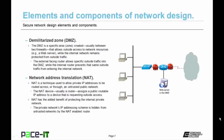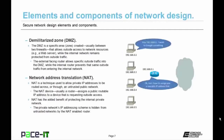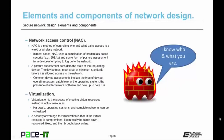The external facing router allows specific outside traffic into the DMZ, while the internal router prevents that same outside traffic from entering the internal network, keeping it safe and secure. Another design element is network address translation, or NAT. NAT is a technique used to allow private IP addresses to be routed across an untrusted public network. The NAT device, usually a router, assigns a public routable IP address to a device requesting outside access. NAT has the added benefit of protecting the internal private network, as the private network's IP addressing scheme is hidden from untrusted networks, making it harder for a hacker to gain access.